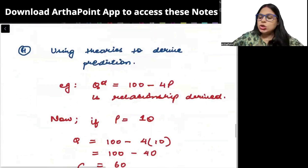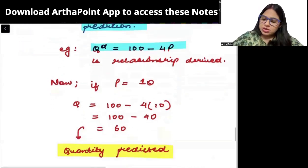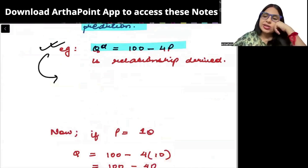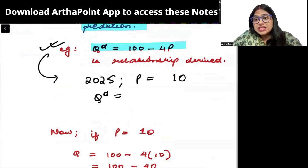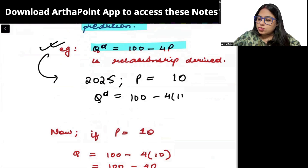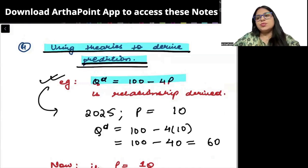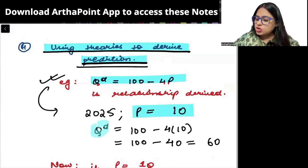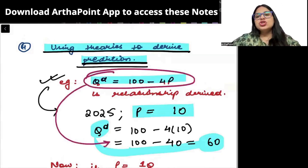The fourth step is using theory to make prediction. Now this model has come to me. Suppose after getting this model, someone asks you that in 2025, I am going to keep the price at 10 rupees. Can you tell me how many quantity I will be able to sell? Then it will be 100 minus 4 into 10, that means 100 minus 40, that means 60. So basically this is using theory to derive prediction. You are predicting the future. When you use the equation you have derived to predict the future, that is step number 4.